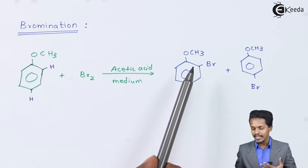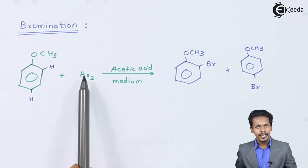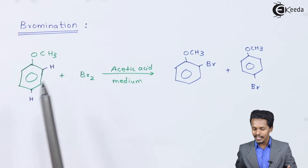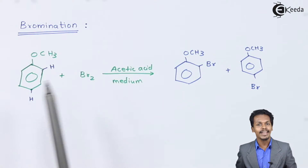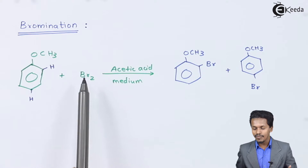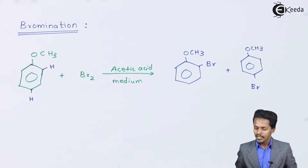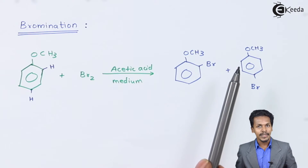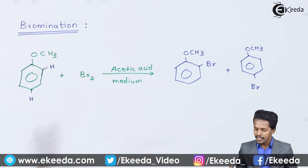Thereby we get an ortho product. There is another possibility: one of the bromine atoms attacks the hydrogen at the para position, and in the form of HBr it is removed as a byproduct, while the rest of the bromine attaches at the para position. Therefore we get a mixture of products, one of which will be the major product and the other the minor product.